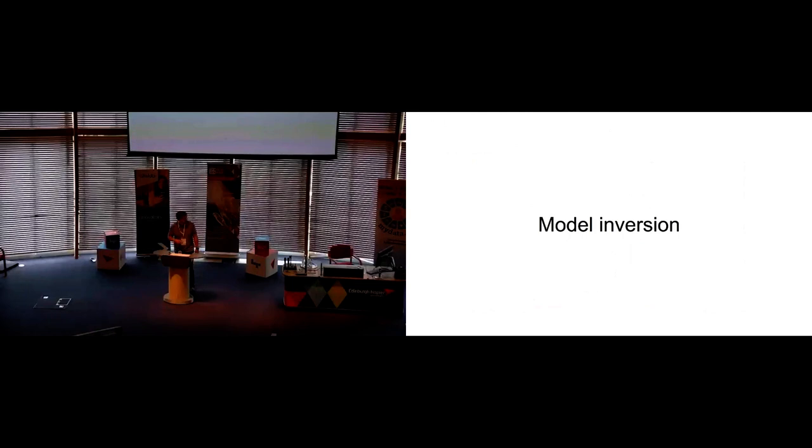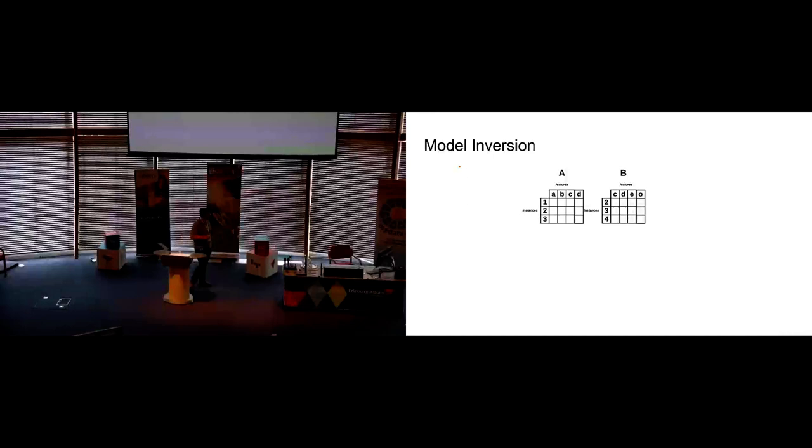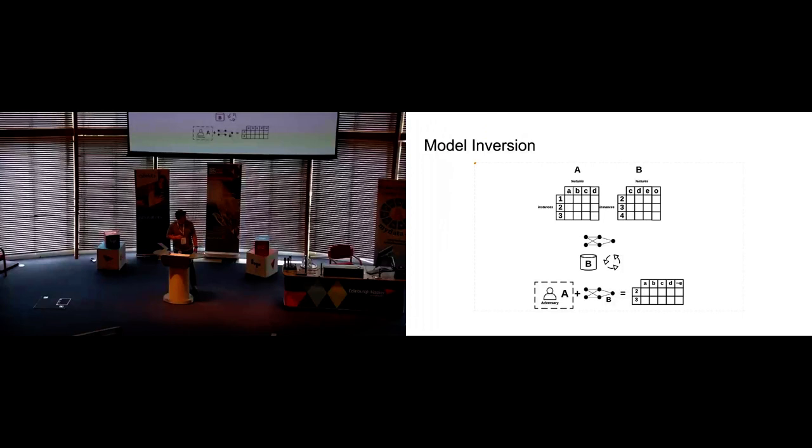So next, we have another attack that we can do on black box, which is model inversion. The idea is we have this similar database A to database B. There are two features in common, C and D. We have our variable which we want to approximate, which is E, and we have our output. So we train on model B. The idea is we can, with database A and the trained model B, just the outputs, we can approximate E.